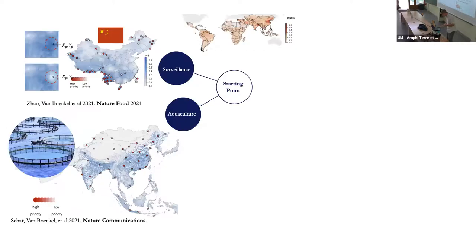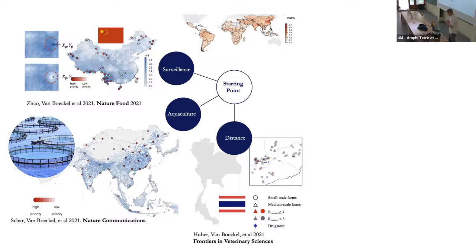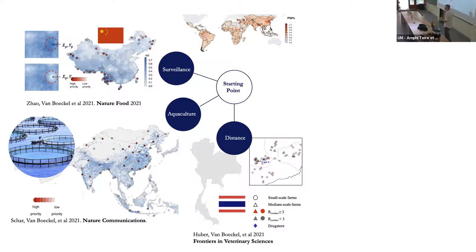We applied a similar approach to aquaculture in Asia — placing surveys in areas that could benefit from more attention in future surveillance. Another question was whether drugstores play a role in aggravating resistance. In a small survey in Khon Kaen province in northern Thailand, we showed that if a farm is located close to a drugstore, this is an aggravating factor for resistance levels on the farm. The closer you are to a drugstore, the more likely you are to seek medical advice from the person selling you the drug — who has a massive conflict of interest.